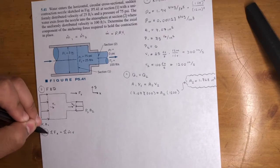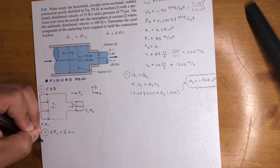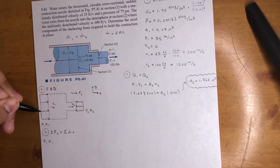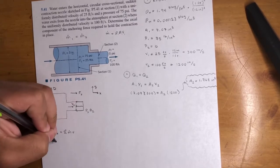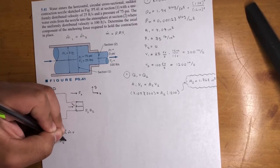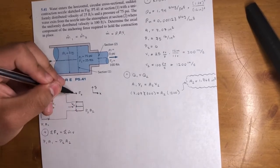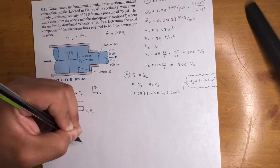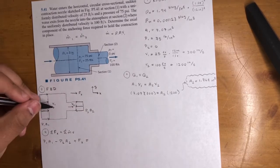So, in the X direction for forces, we have a pressure times area right here. So, P1 A1 in the positive X direction. We have a negative P2 A2 because it's going in the negative X. We have our force, what we're trying to find. And we assume it's in the positive X. And then, that's the last one.